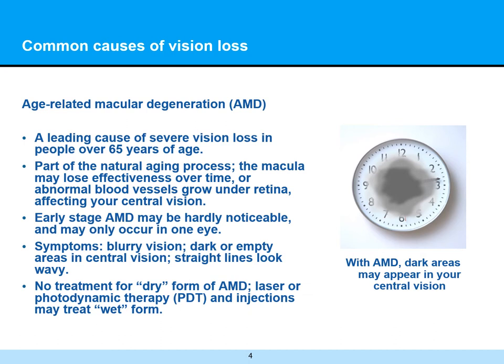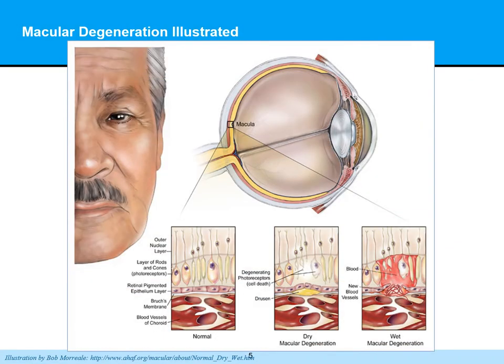With macular degeneration, dark areas may appear in your central vision, as you can see with the simulation on the clock — it would be very difficult to tell what time it is. On this slide, we can see an illustration of macular degeneration. The macula is shown here, which is the specific part of the retina involved in central vision and where all the detail is basically processed.